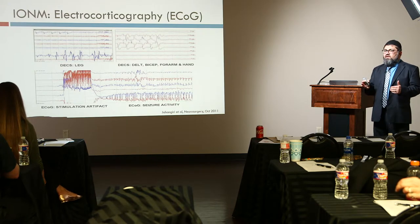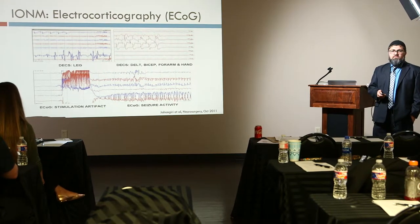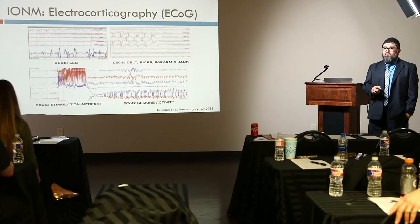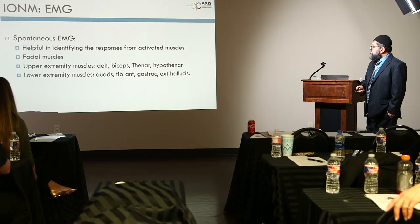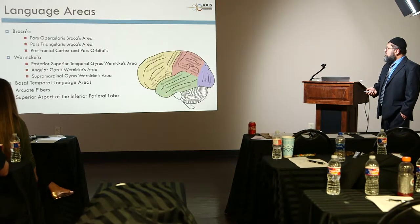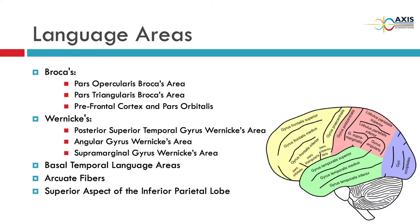We record spontaneous EMG from all contralateral muscles — upper and lower extremity. For the language area: there are two main language areas, Broca's and Wernicke's. Broca's area is more anterior, close to the motor area; Wernicke's is more posterior. Broca's area has three sub-areas. When we do language mapping, we first go talk to the patient in the preoperative area.